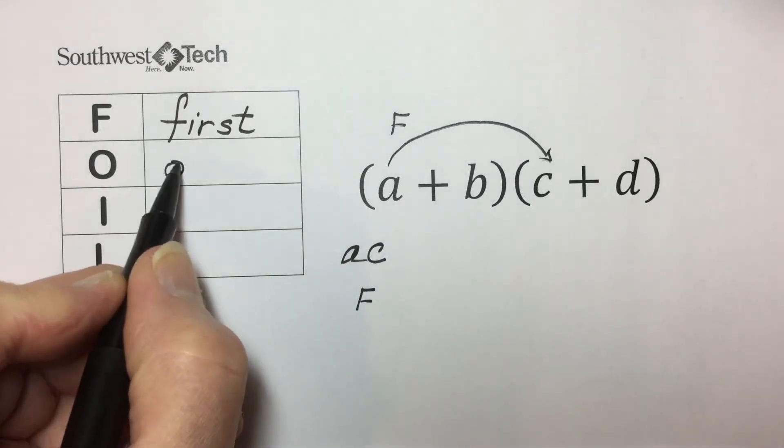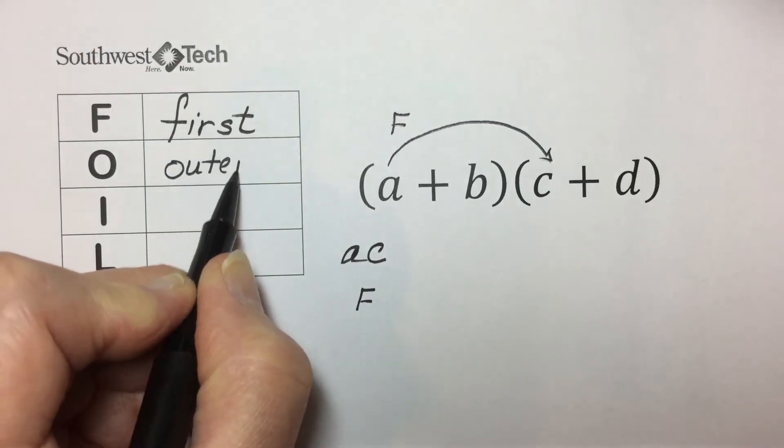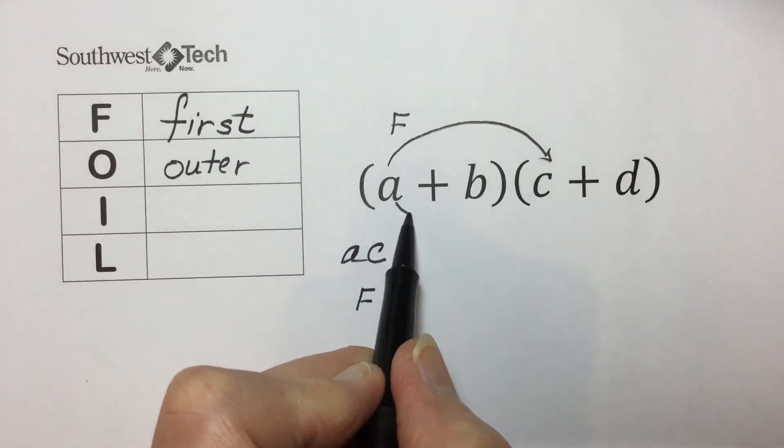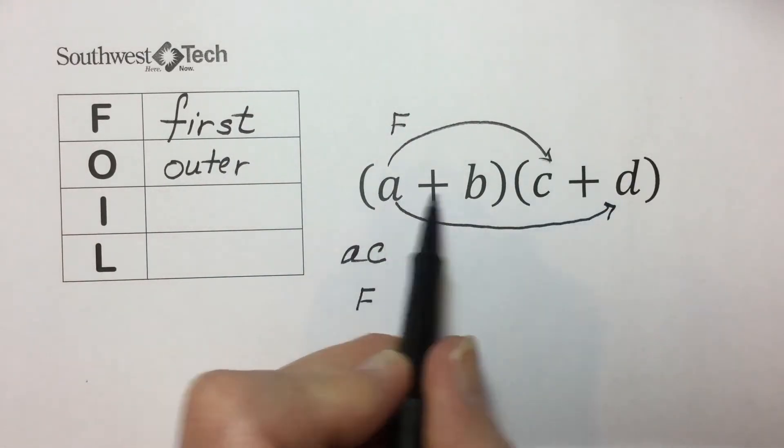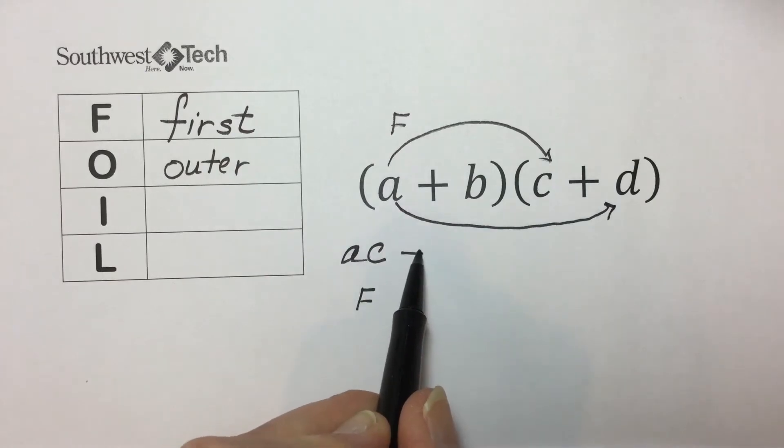O is for the outer terms, and the outer terms here are the first and the last that are multiplied together.